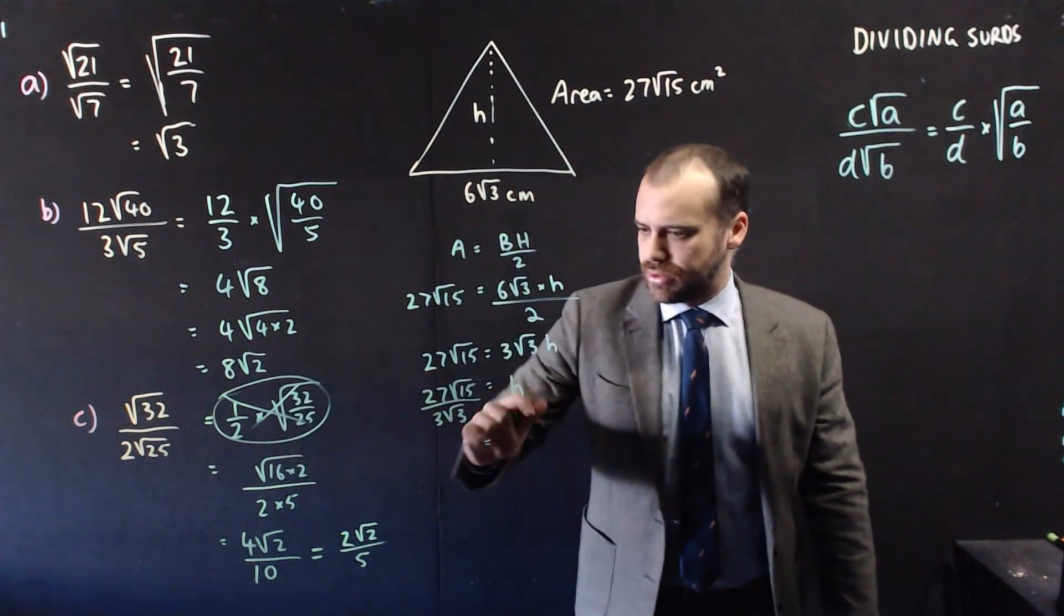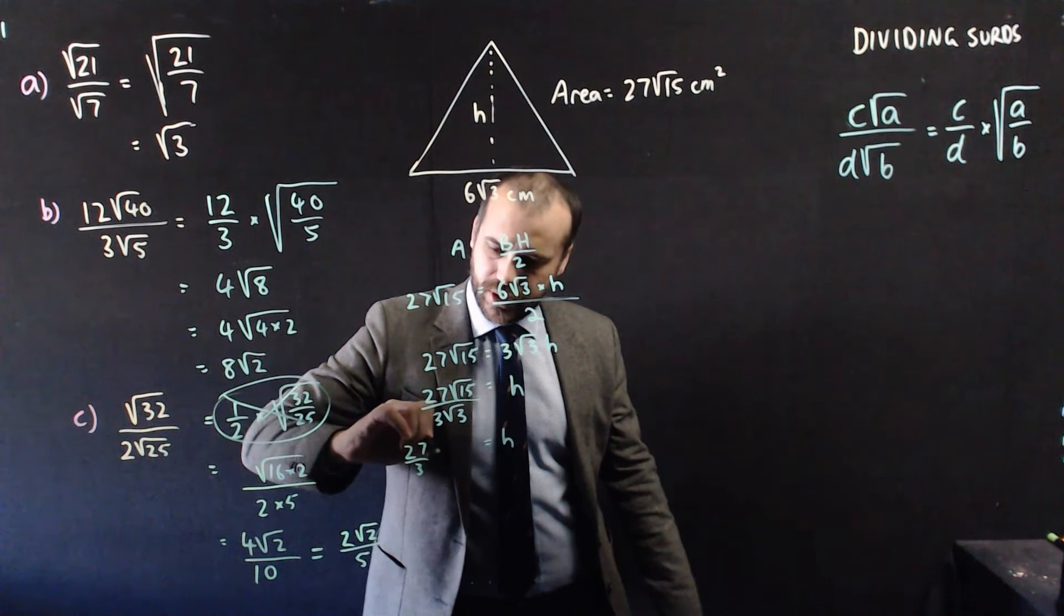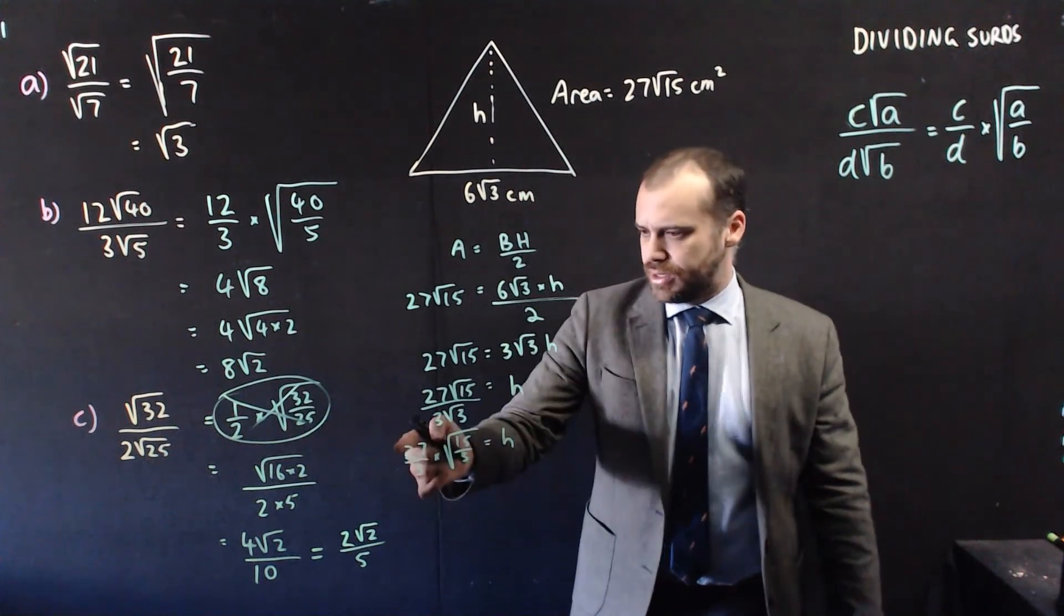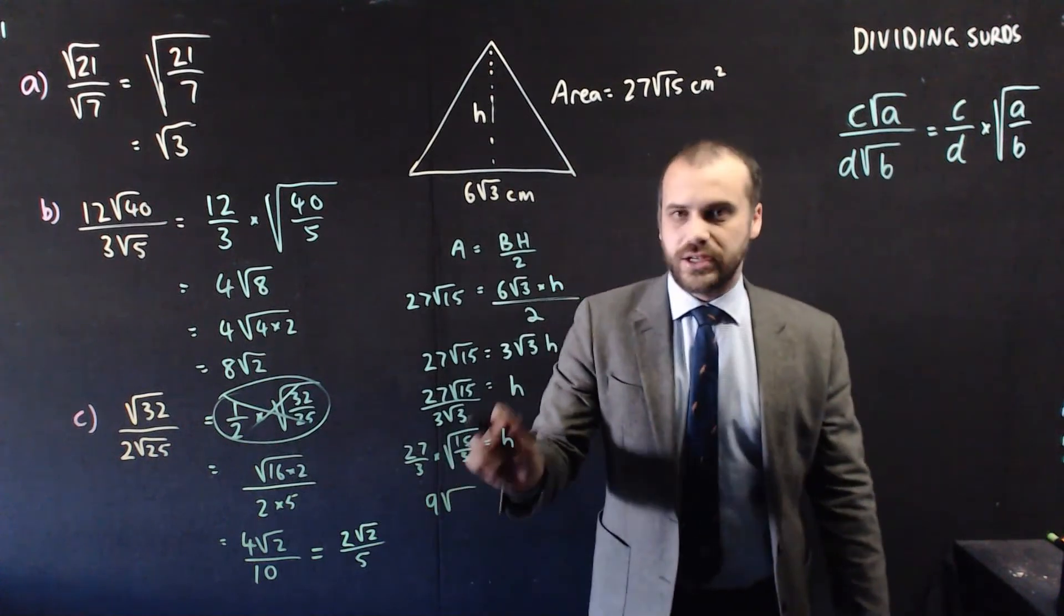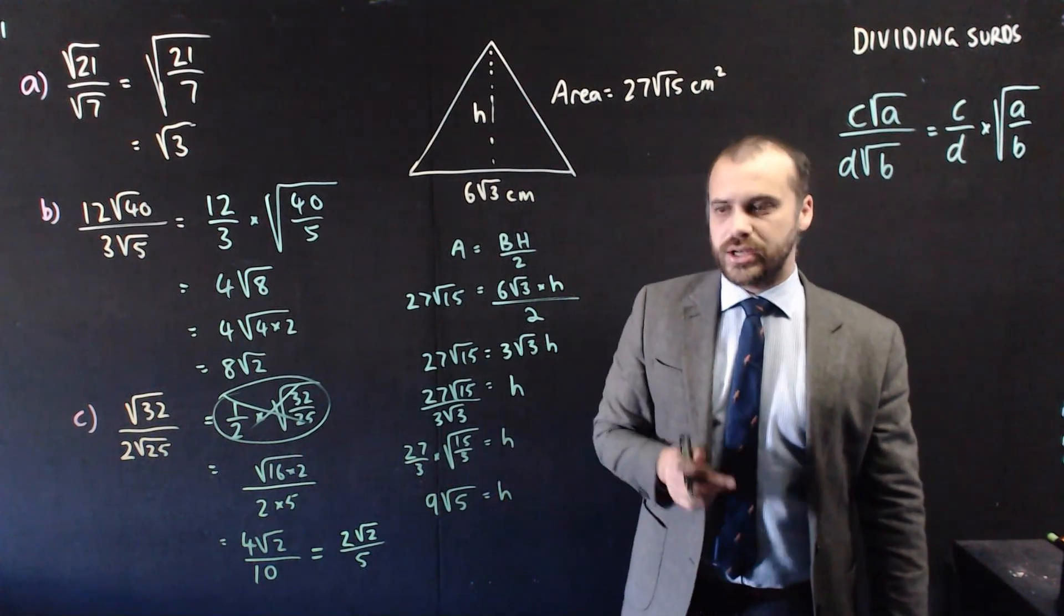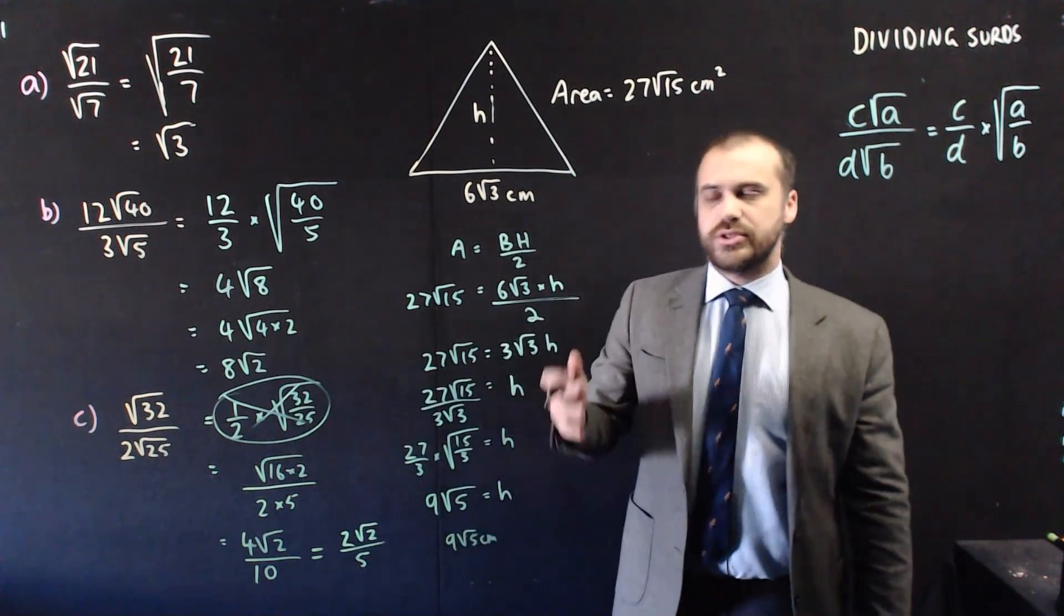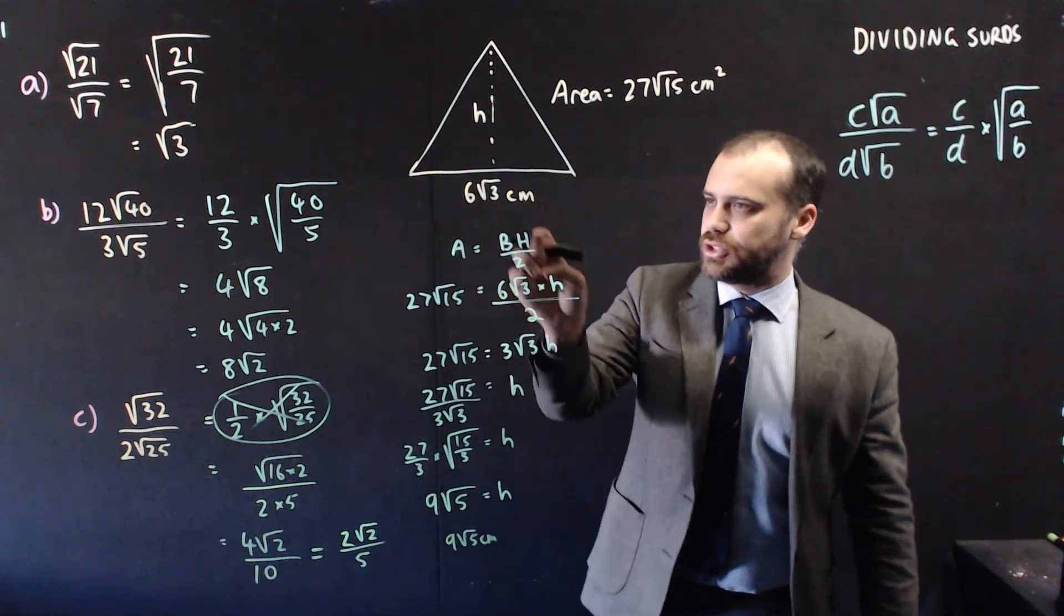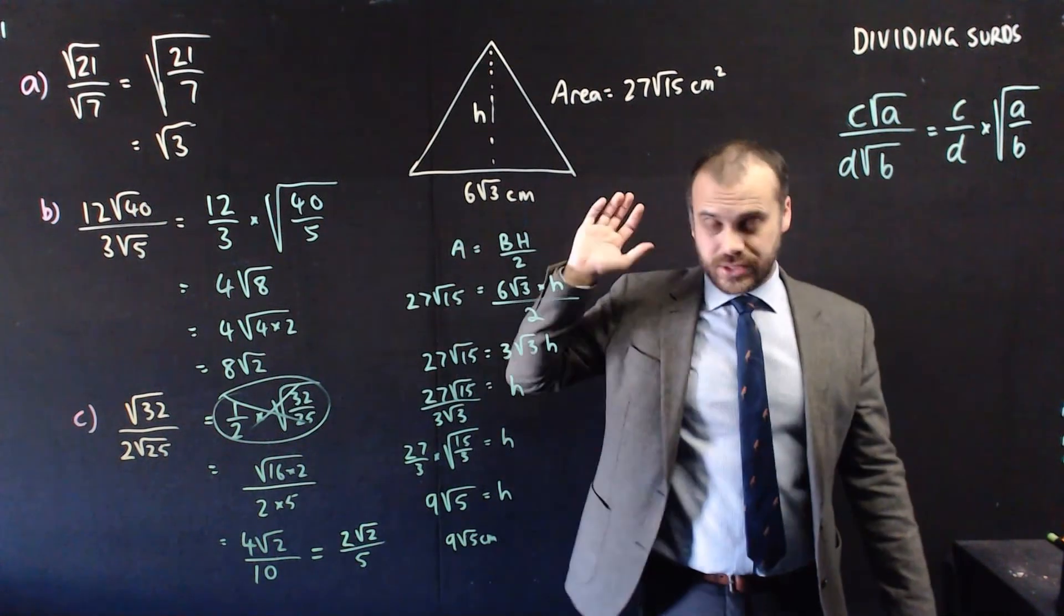Now, we want to simplify that. We want it to be as simple as possible. So, we get 27 divided by 3 times root 15 over 3. Now, 27 divided by 3 is 9, and 15 divided by 3 is 5. The height of our triangle is 9 root 5 centimeters. And of course, you can check that if you take this and this and you put it back into this original formula, you would really hope that this number gets spat out the other side. That is dividing surds.